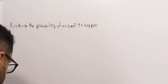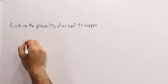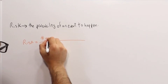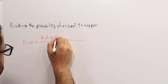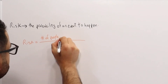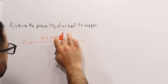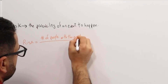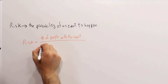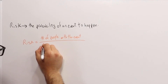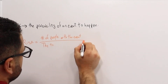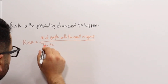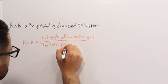The formula for risk is basically the number of people — this could be participants or patients — with the event, over the total number in the group. So: number of people with the event in the group, over the total people in the group.